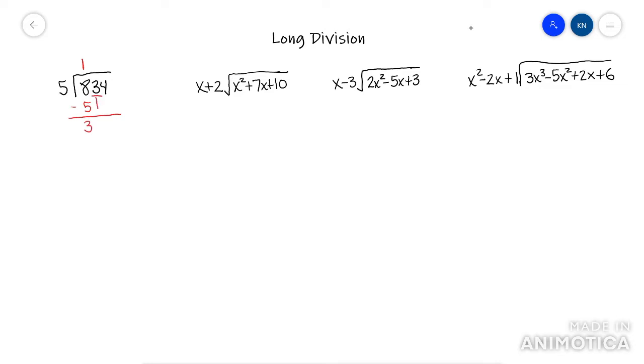8 minus 5 is 3. Then you drop the next term. Now you repeat the process. 33 divided by 5 it goes in 6 times.